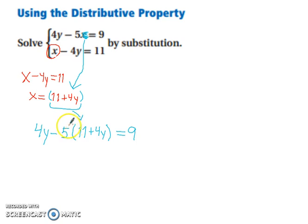Well, we have a number outside of a set of parentheses that have a binomial, which means you need to distribute.